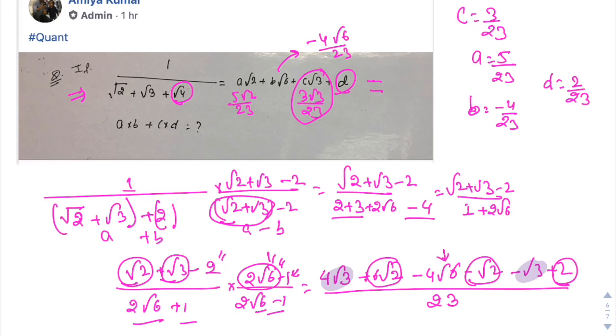We have all the values. We want a into b. If we go for a into b, it's nothing but minus 20 upon 729. If we go for c into d, we have nothing but plus 6 upon 23 into 23. So we are left with minus 14 upon 729 as the answer of this question.